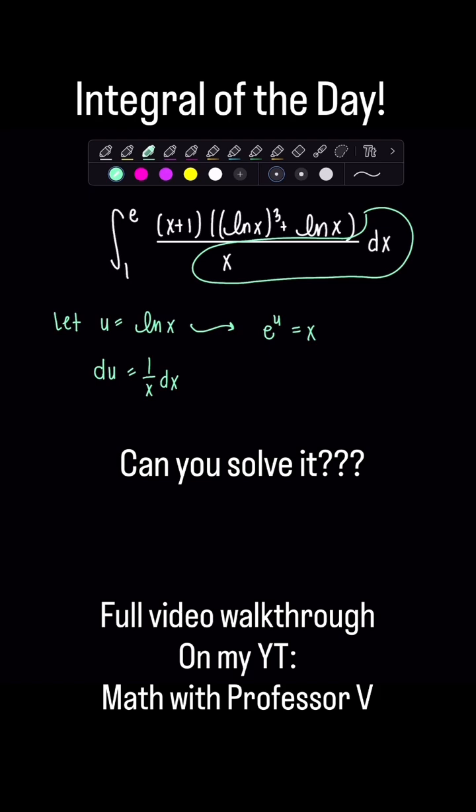we need to change our limits of integration. So currently 1 and e belong to the variable of the integral which is x. So u of 1, my lower limit, would be natural log of 1 which is 0 and then u of e is natural log of e which is 1.